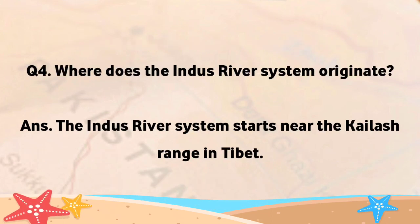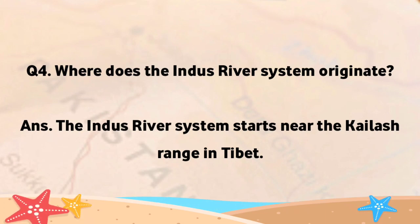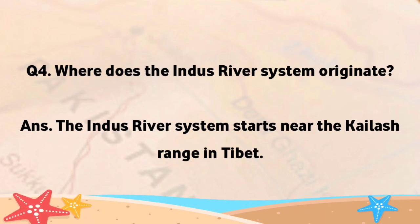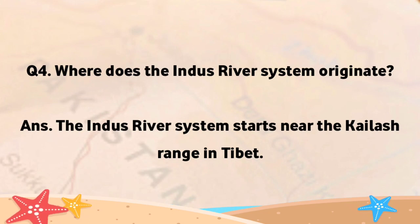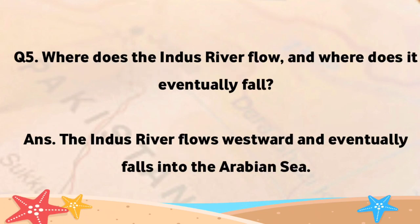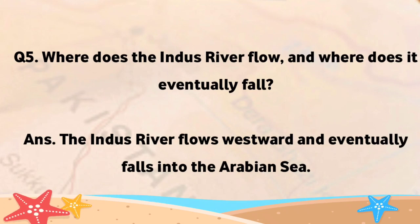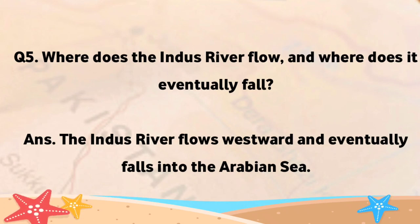Where does the Indus River system originate, and where does it eventually fall? The Indus River system starts near the Kalash Range in Tibet. The Indus River flows westward and eventually falls into the Arabian Sea.